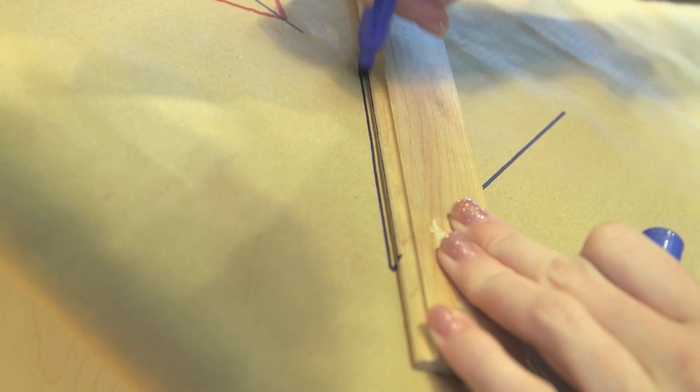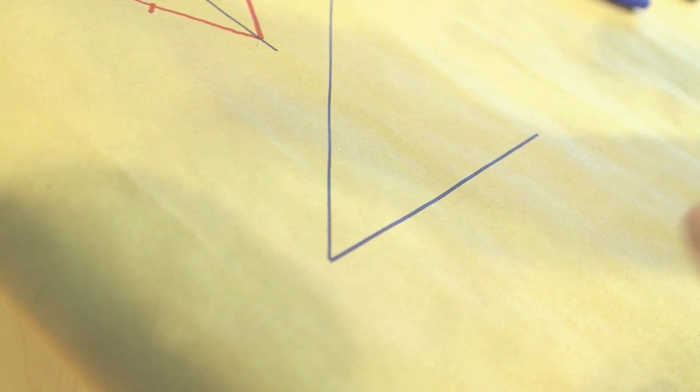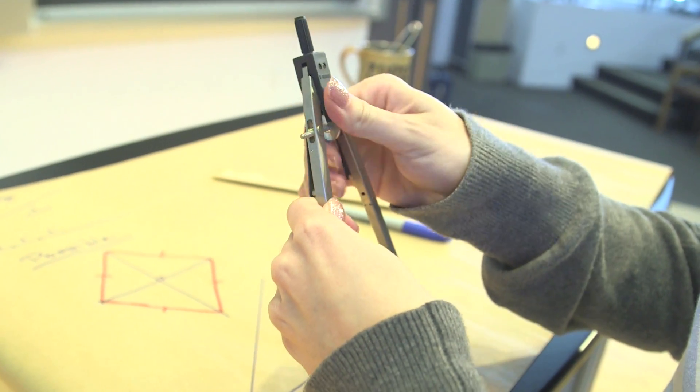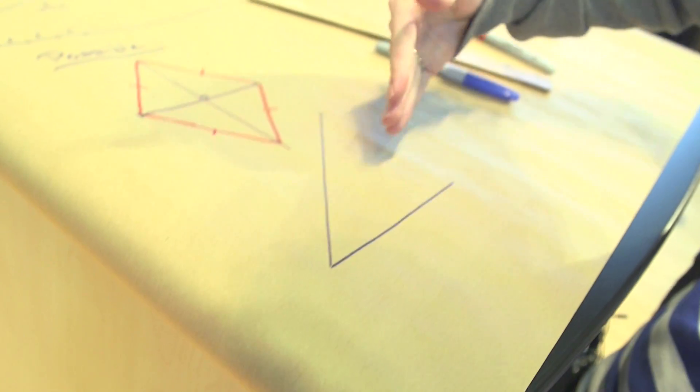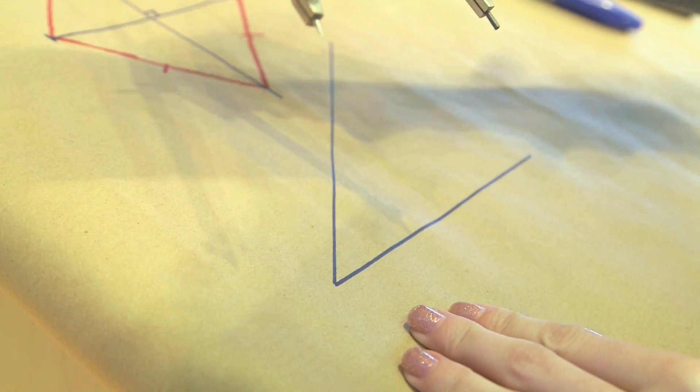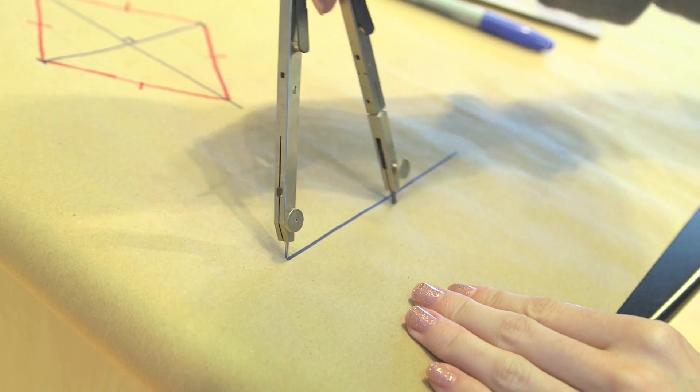Another thing you can do - this is some angle, we don't know how big it is, we can't measure it because we don't have an angle measuring device. But whatever it is, I can bisect it, meaning I can construct a line which is right in the middle. So how do we do that? We take the compass, open it to whatever width, doesn't matter, draw a circle arc.